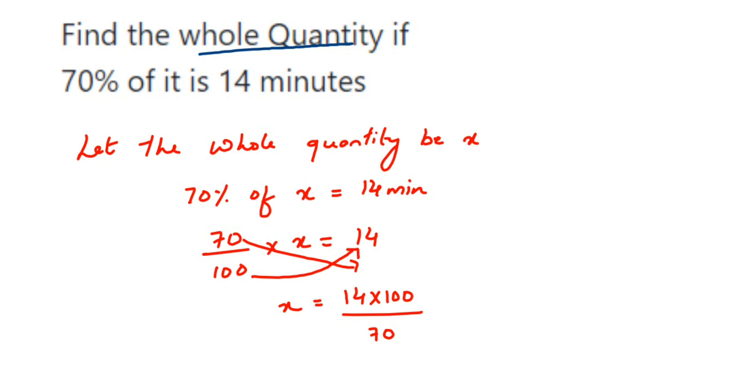14 ones are, 14 fives are 70. Cancel 5 and 100, 5 ones are and 5 twenties are 100. So therefore, x is equal to 20 minutes.